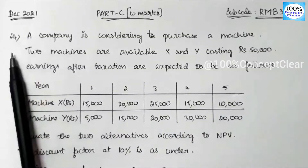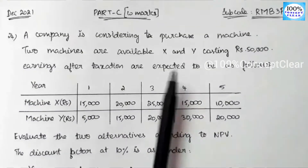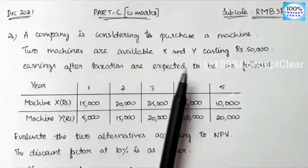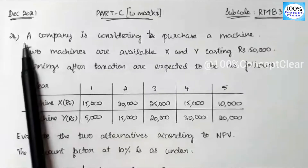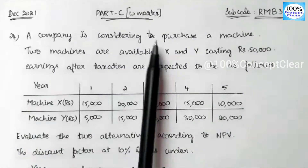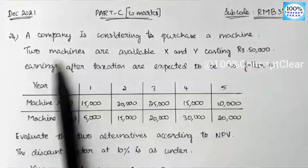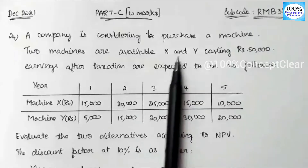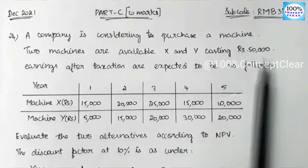We will have the 24th sum, and in this sum we will have a Net Present Value problem. The question is: a company is considering to purchase a plant. Two plants are available, X and Y, costing $50,000.